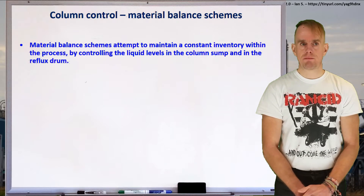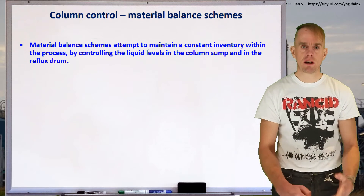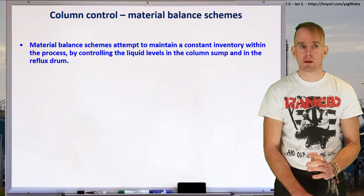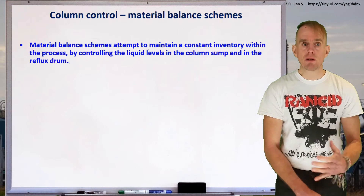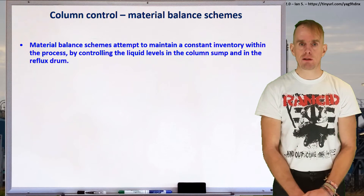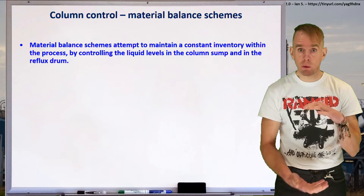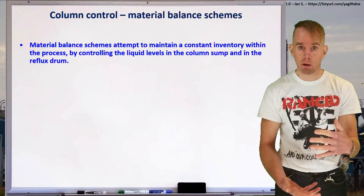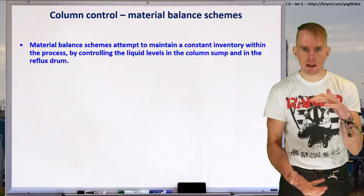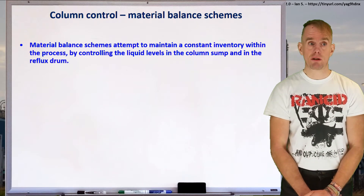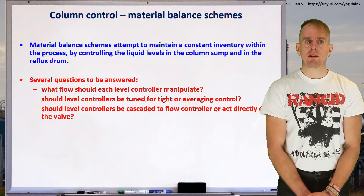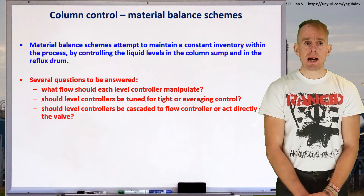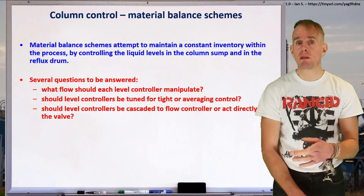Let's turn our attention now to the second question: how do we control our column for the given scenario it's operating in? Let's talk about the first of these two schemes — material balance schemes. Material balance schemes attempt to maintain a constant inventory within the process, and they do this by controlling the liquid levels in the column sump and in the reflux drum. In the base of a distillation column, you have liquid holdup called a sump, typically with five to seven minutes' worth of holdup under normal flow conditions. If we elect to use a material balance scheme, we need to figure out which flow each level controller should manipulate, how that flow controller operates, and whether level controllers should be cascaded onto flow controllers or act directly onto the valves themselves.